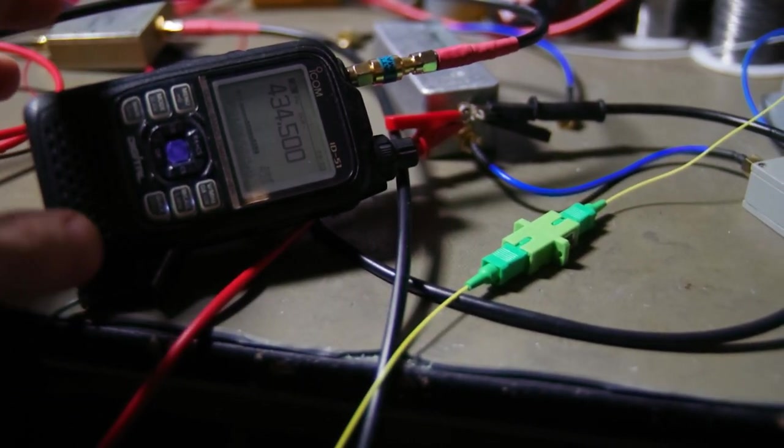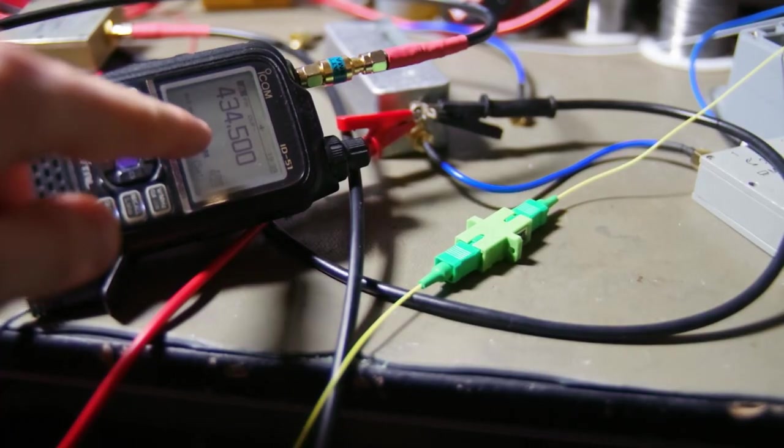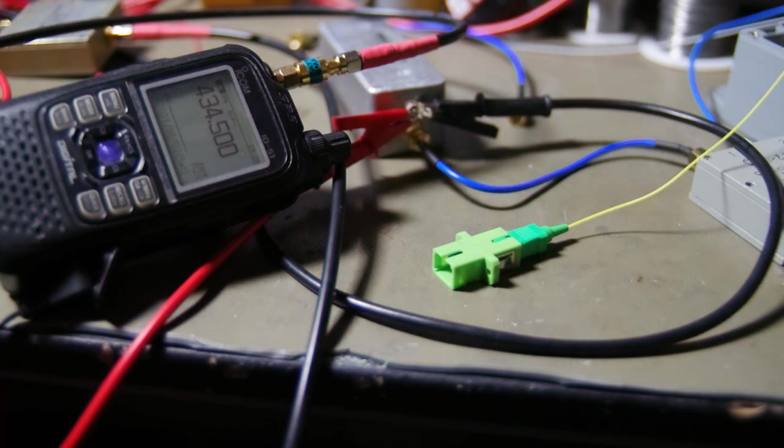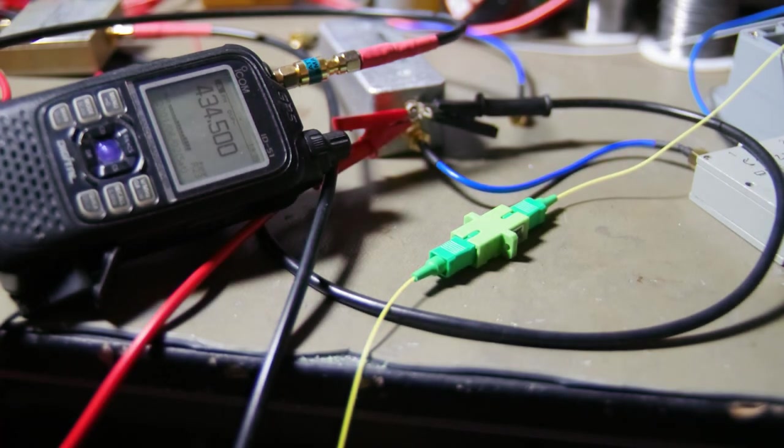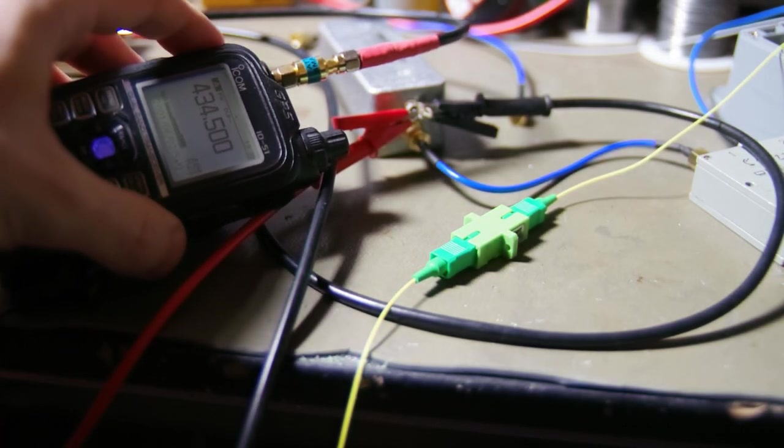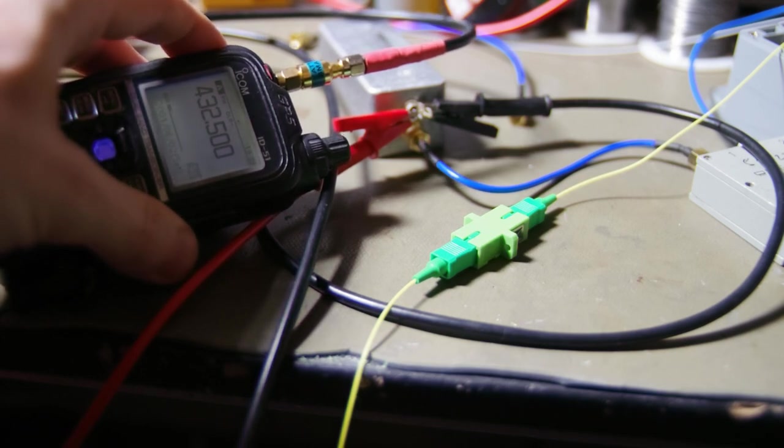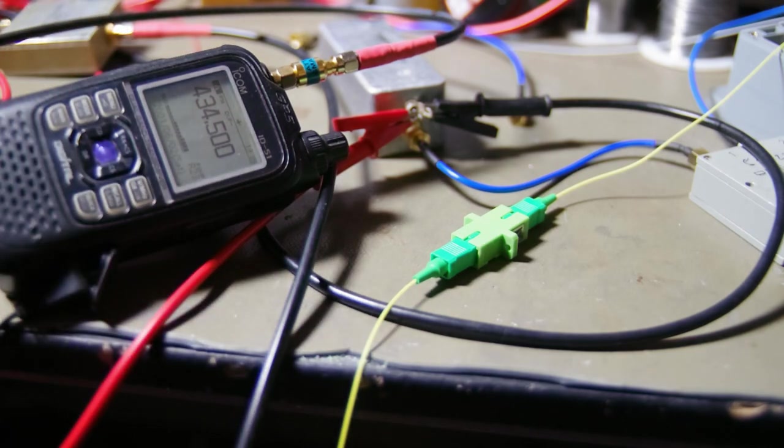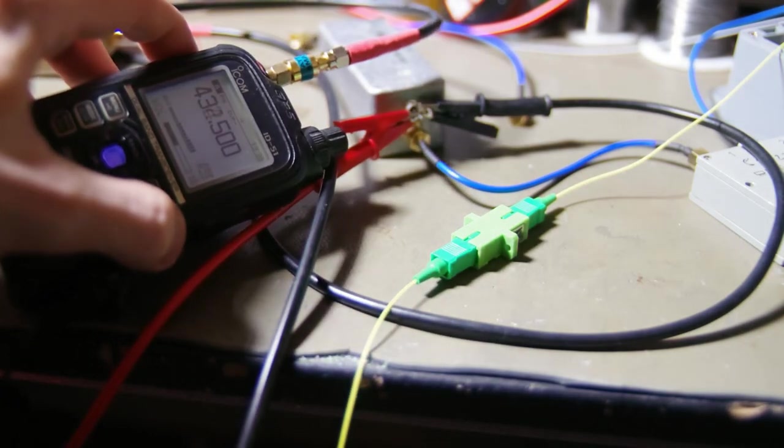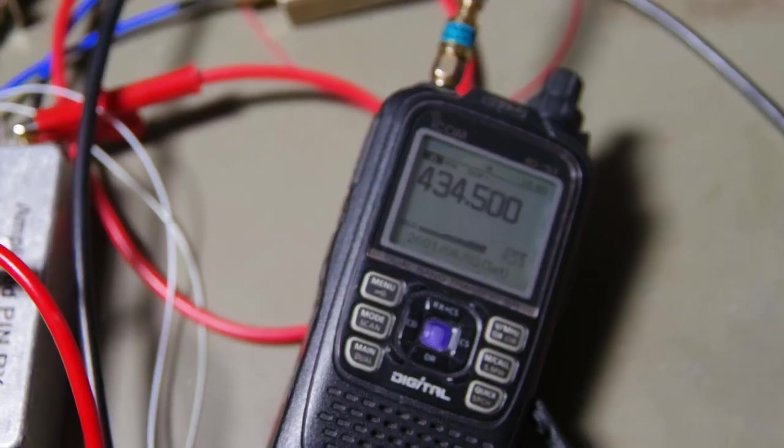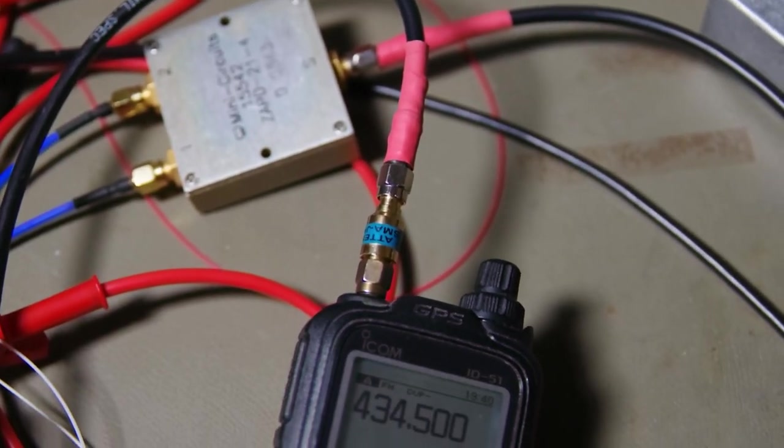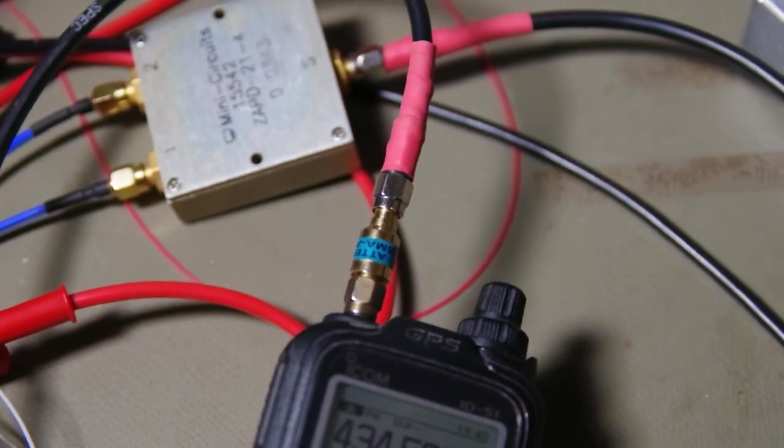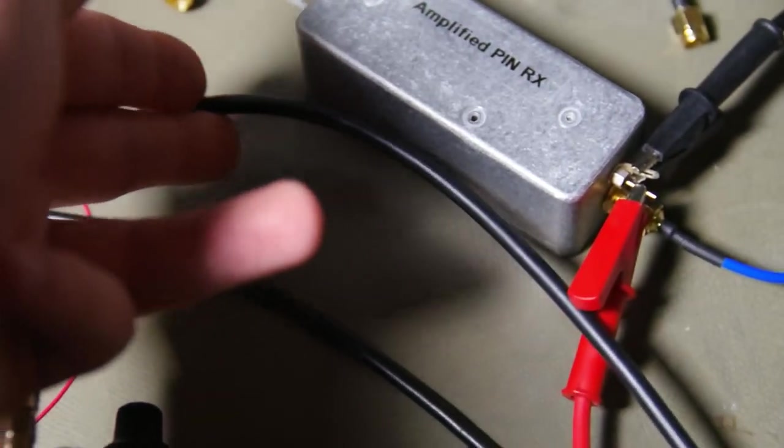So we have the radio there. You can see here, signal strength meter, full signal. So how does this work? We have here our trusty ID51. Sadly obsolete because it's D-star. This is connected through a 10 dB attenuator.